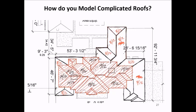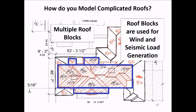When modeling complicated roofs for a 2-story structure with a very complicated roof, you could take the time to create the exact shape of the roof by specifying multiple roof blocks once in the roof blocks view. Keep in mind that roof blocks are only used for wind and seismic load generation and do not affect shear wall design.